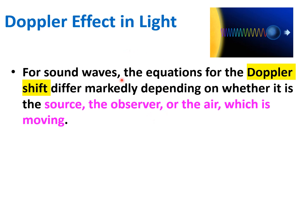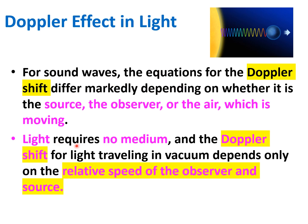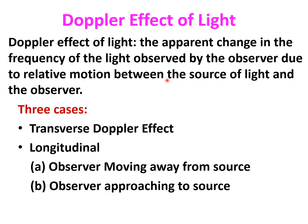In the case of the Doppler effect of light, it is a little different from sound waves. For sound waves it depends on the velocity of the source, velocity of the observer, and also the velocity of the air, because sound needs a medium to travel. But light does not require any medium, so the Doppler shift depends only on the relative speed of the observer and the source.